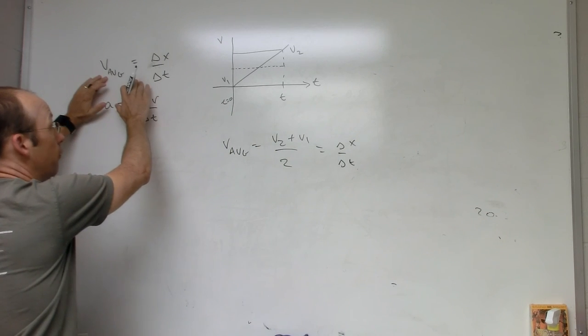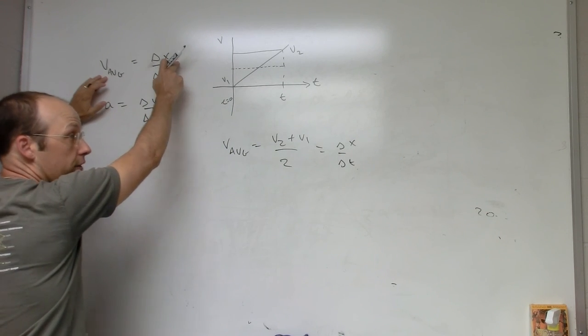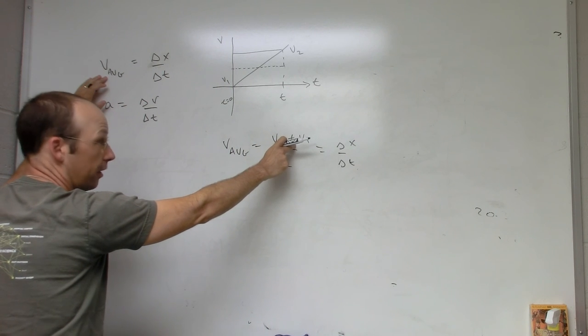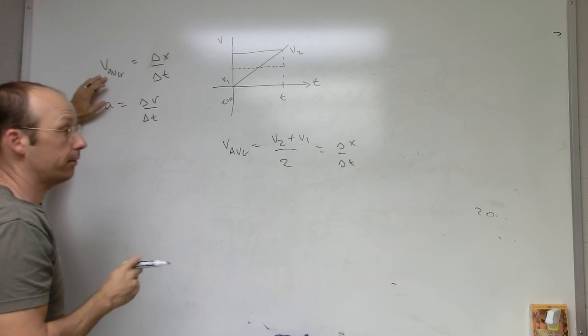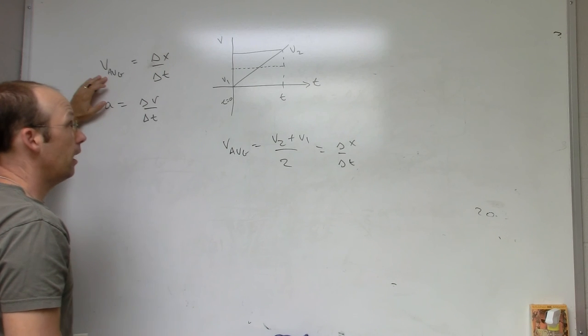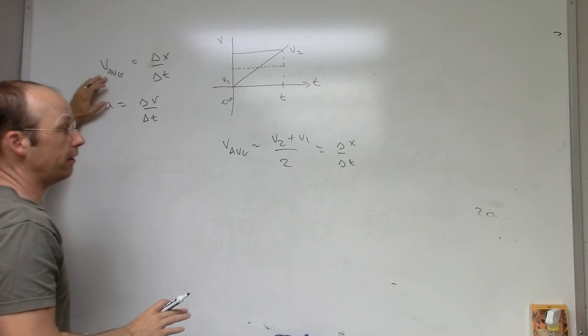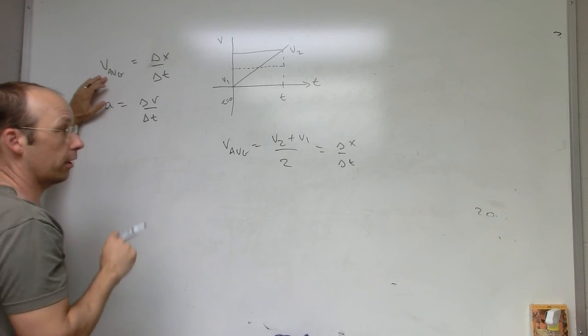I have the change in position over the change in time, and the final plus initial velocity divided by 2. They're the same thing. Okay, let me just write this out a little bit, but this is where I'm going to start with.